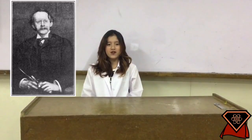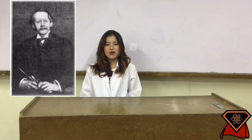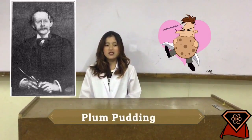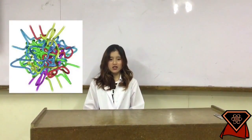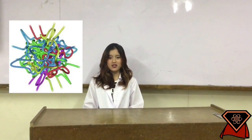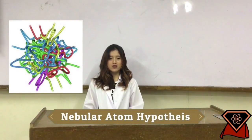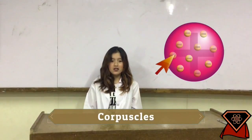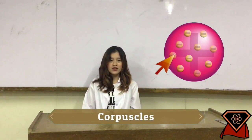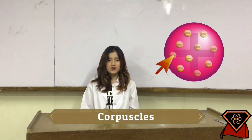Joseph John Thompson named this model the plum pudding because his favorite food is plum pudding. With this model, Thompson abandoned his earlier nebular atom hypothesis, in which atoms were composed of immaterial vortices. Thompson called the negatively charged particles corpuscles.